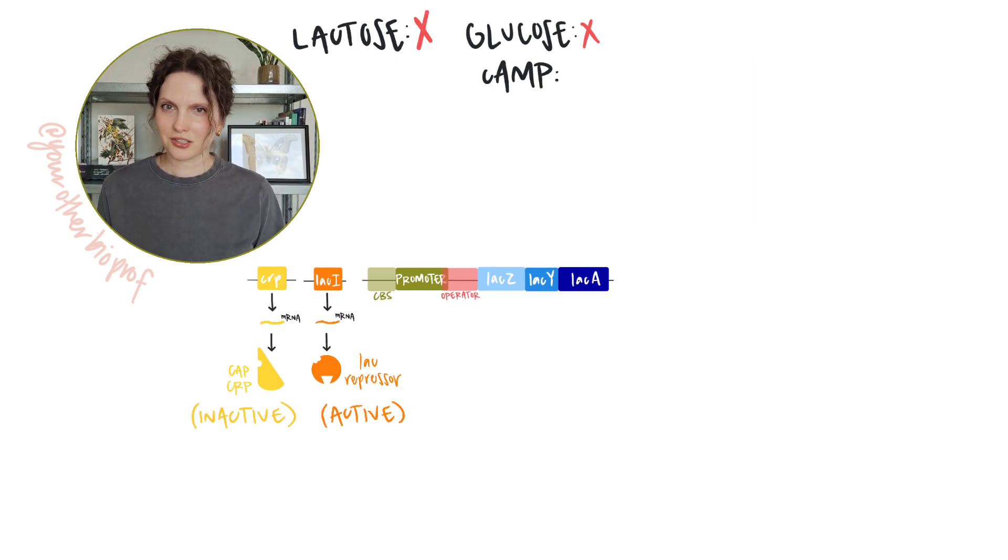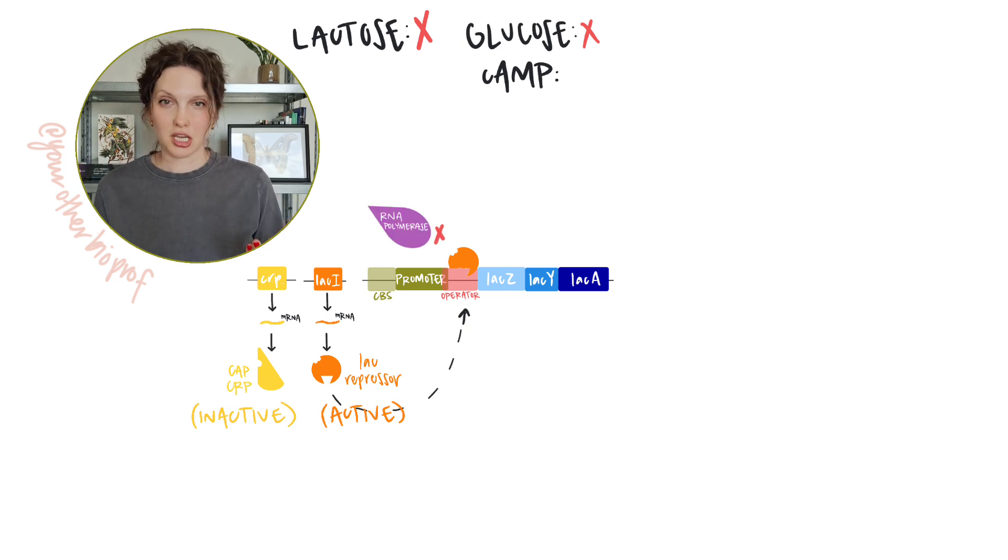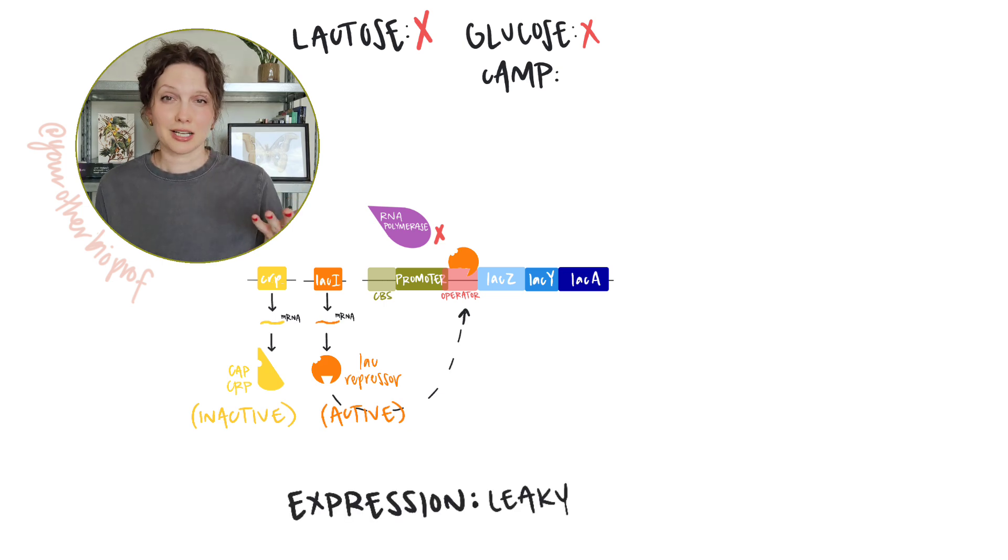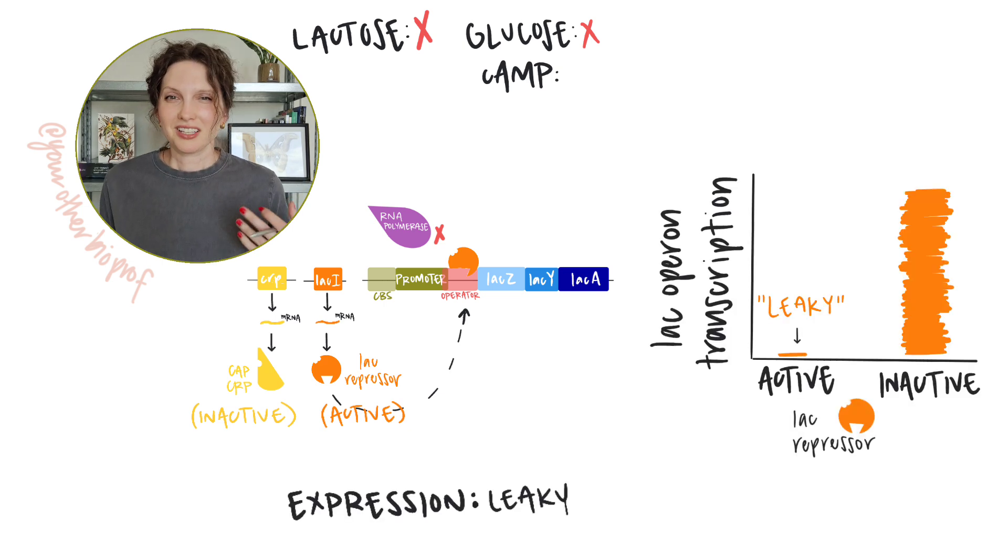Alright, cool. So what about when there's no lactose around? Well, remember that no lactose means that the repressor, lac repressor, is going to stay active and bind to the operator, blocking RNA polymerase from being able to initiate transcription. We're going to get that leaky level of expression, your class might call it off, right? Because there's no sense in making a bunch of product of lactose metabolizing structural genes if there's no lactose to metabolize.